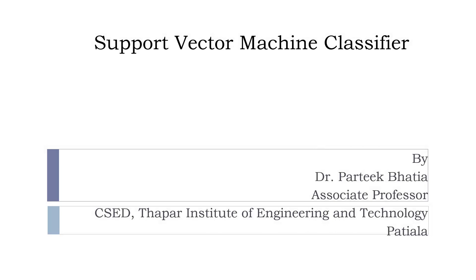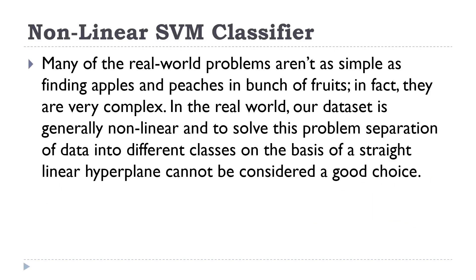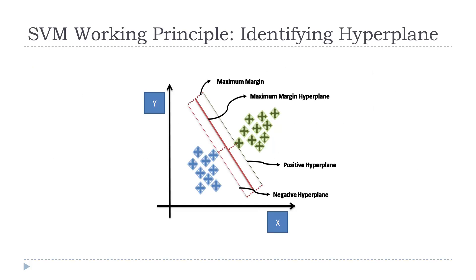Hi, myself Pratik, and in this session we are going to discuss Support Vector Machine Classifier for nonlinear datasets. In the last session we discussed SVM for linearly separable data points. We considered a binary classifier with two attributes x and y, identifying an apple and peaches case, and we were able to find a hyperplane which can linearly separate those two data points into different classes.